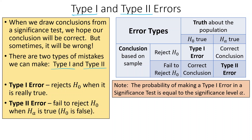Type 1 is if we reject the null hypothesis when the null hypothesis is really true — so we rejected a true null hypothesis. Because if the null hypothesis is true, we shouldn't reject it. That is what we call a Type 1 error. A Type 2 error is when we fail to reject the null hypothesis, but the null hypothesis is actually false — in other words, the alternative is true.